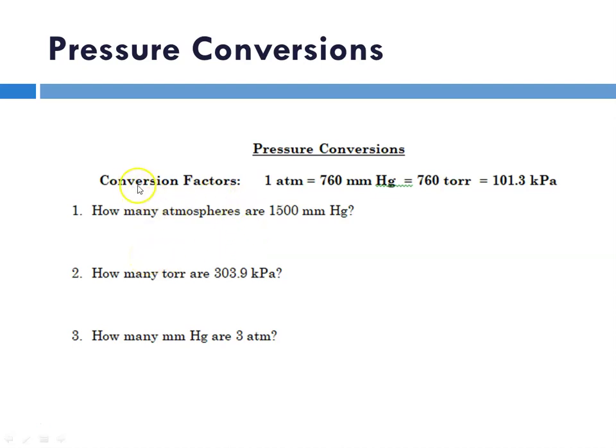But basically, along the top, you'll see our reminder that one ATM unit is the same as 760 millimeters of mercury, which is equal to 760 torr.